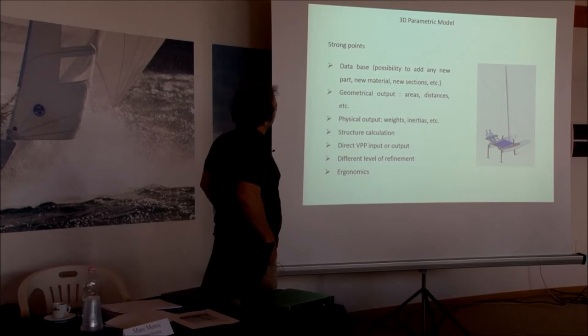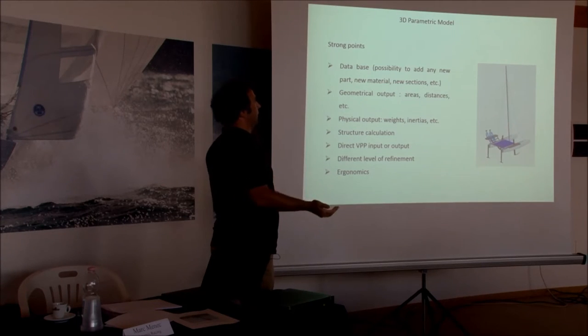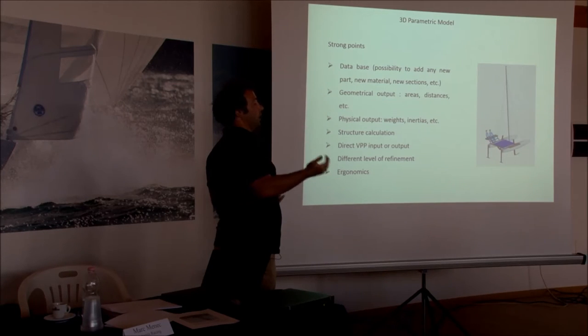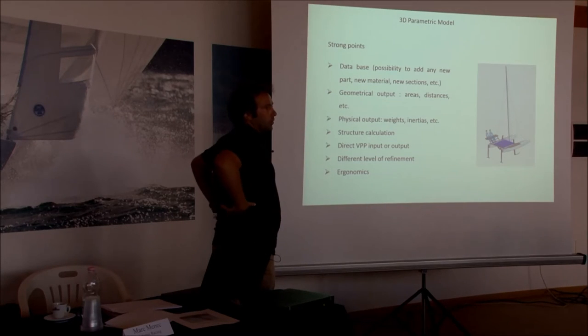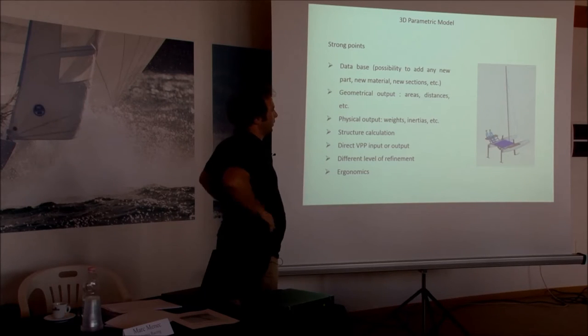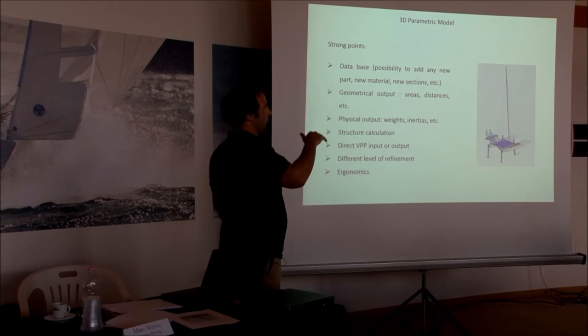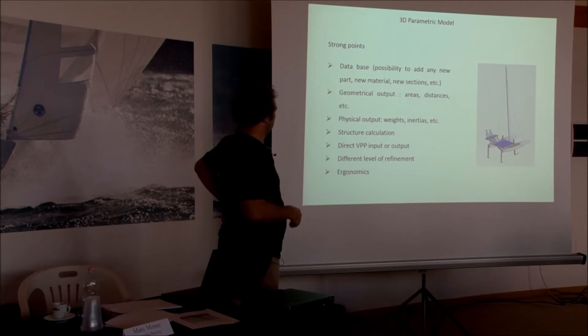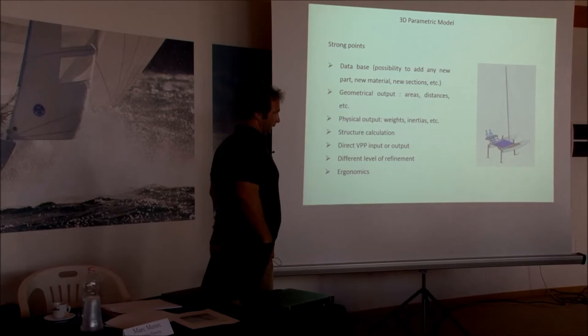The strong point of this part of the tool is that we've got a database. We can include whatever parameters we want. Each things we learn, or there is new material we want to put in, you can just feed as your project is going in. You've got all the output you want - area, distance that feed also the VPP. You've got some physical output directly - weight, inertia. You've got a bit of structural calculation inside. It's got a link with the VPP input and outputs. We can define level of refinement in this model. You can just make the basics and after you can go step further - put the lamination, the laminates. It's got no limits. We can check the ergonomics.